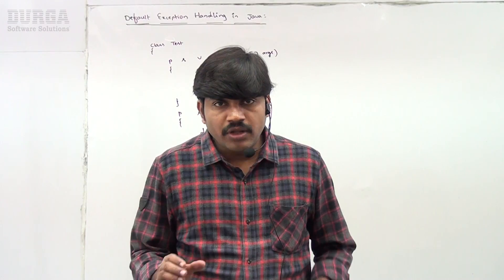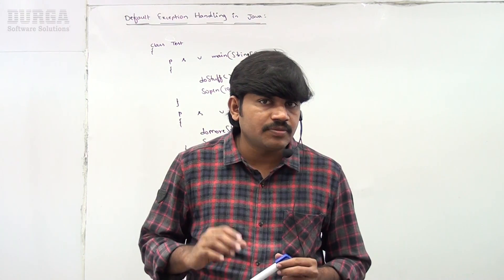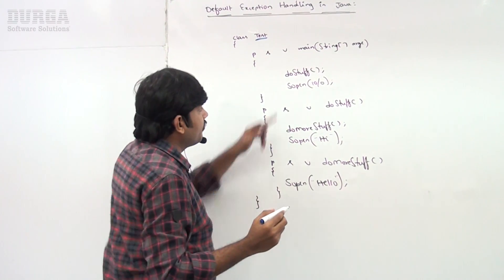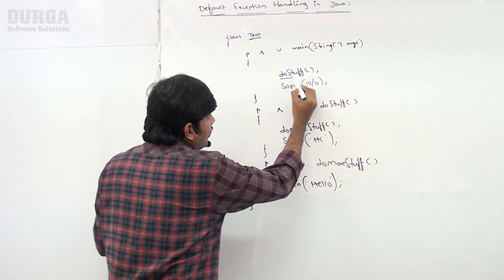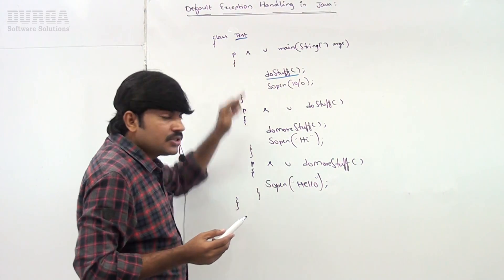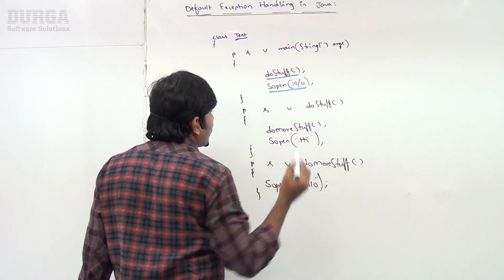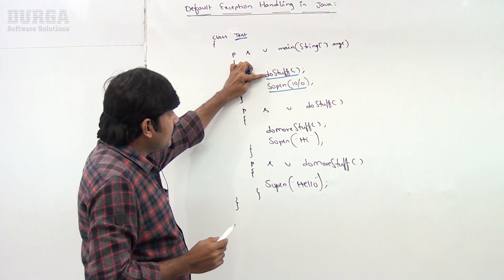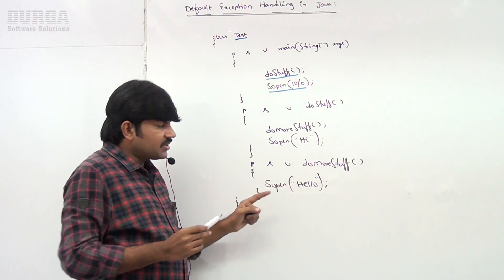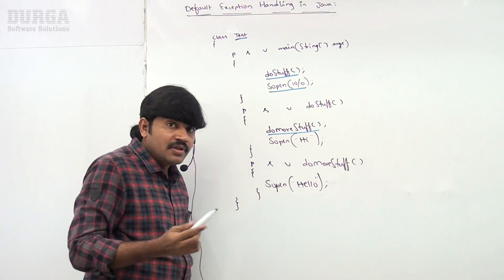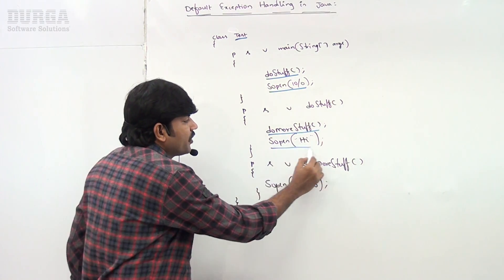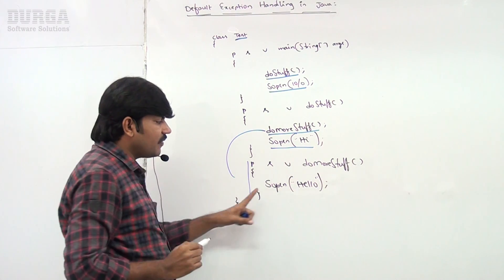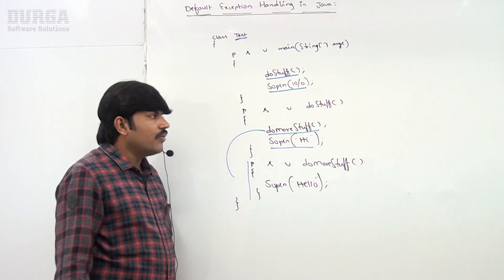Now the last example related to default exception handling. Observe carefully: class Test, public static void main. The main method calls doStuff, and after completing doStuff it executes System.out.println of 10 divided by 0 — so the exception will be raised inside the main method this time. Inside doStuff we are calling doMoreStuff, and after completing doMoreStuff there is System.out.println of 'hi'.